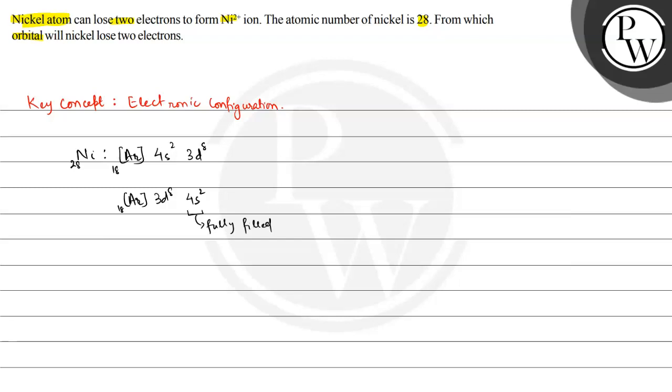But 3d is not fully filled. So if we excite it and release two electrons, then the electronic configuration would be Argon 18, 3d⁸ 4s⁰.